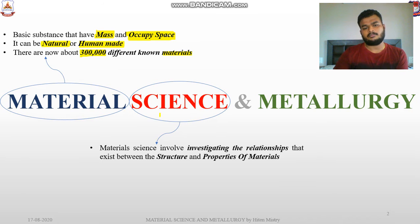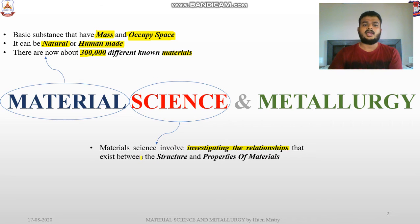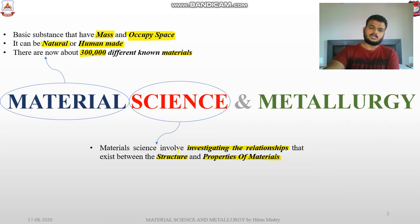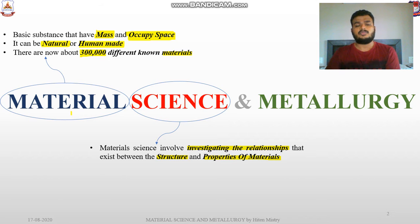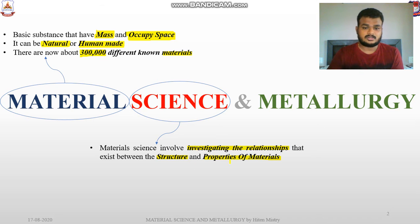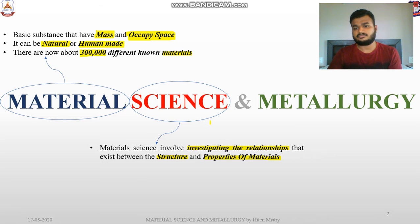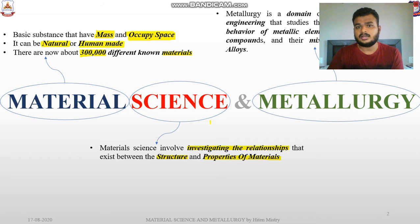Now, what is the science behind that? Material science involves investigating the relationship that exists between two points: first is structure and second is property. If we know what structure we need to make, we have to select the material accordingly, and before selecting the material we have to know what is the property of that material. These structures and properties come under material science.